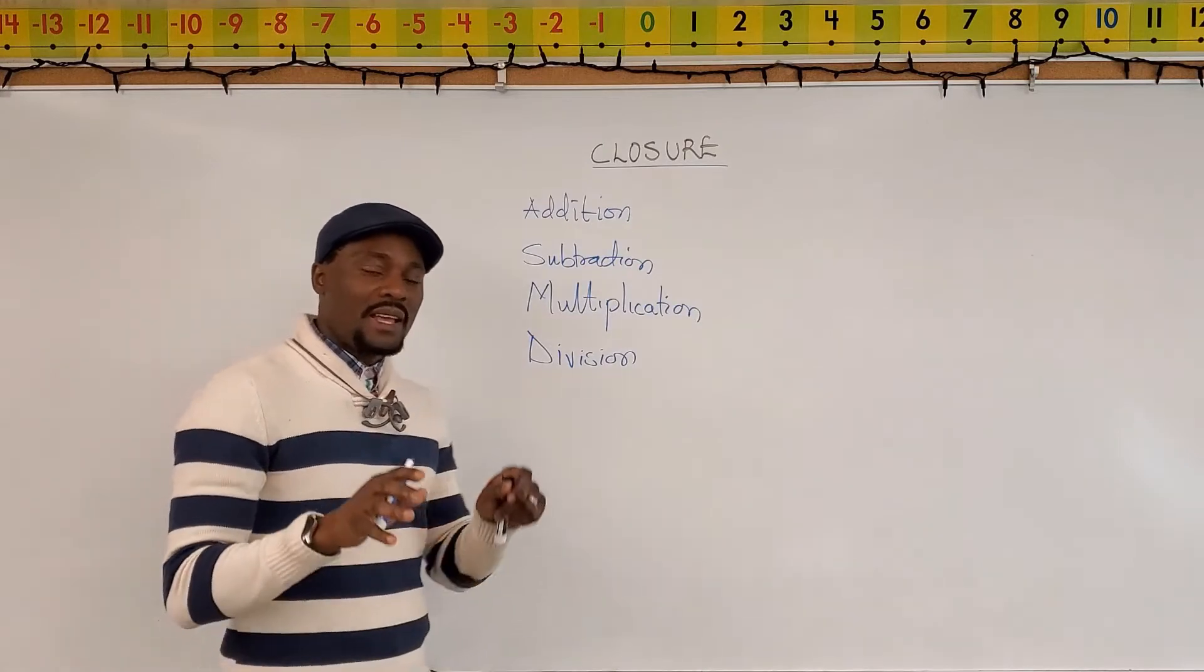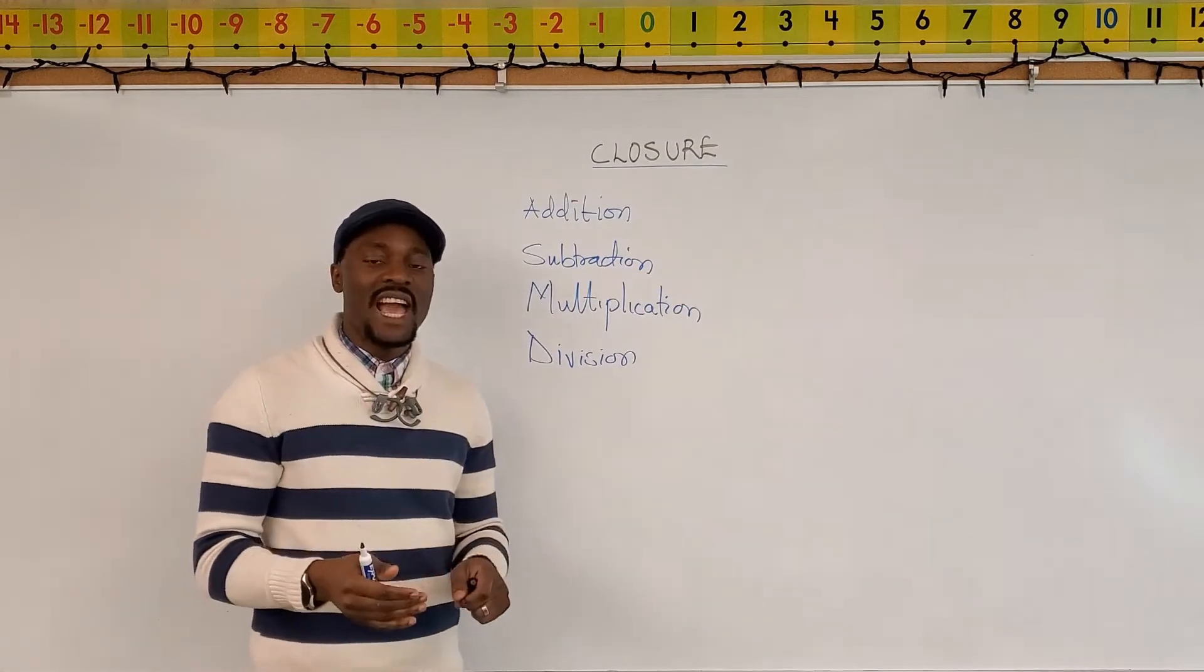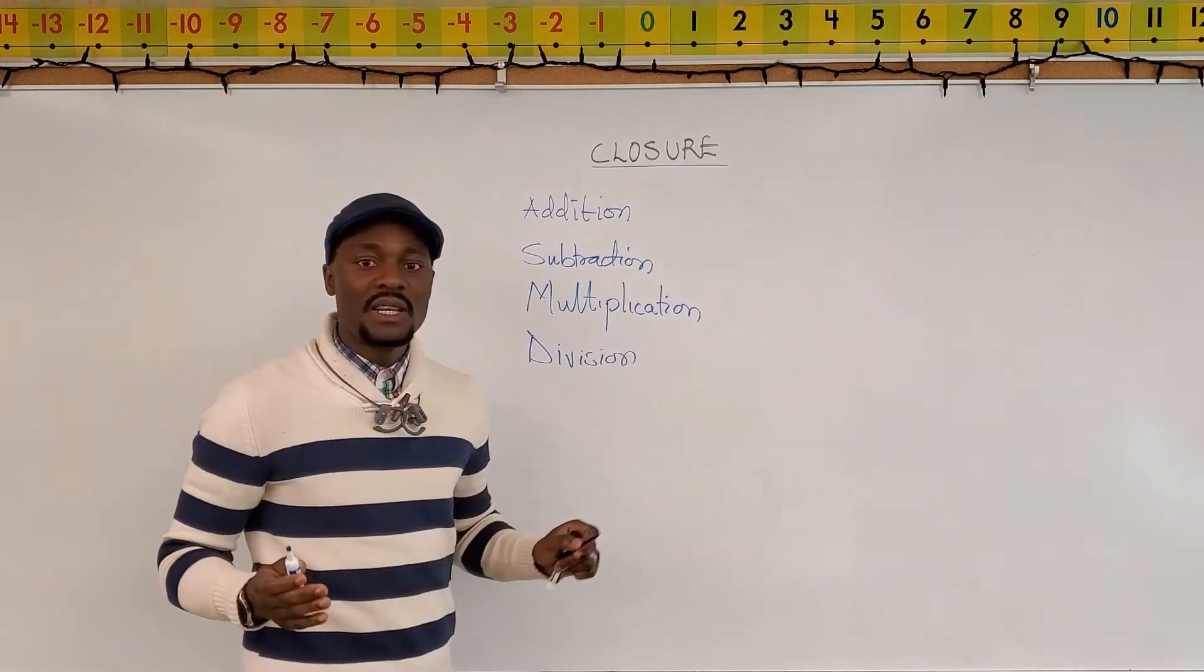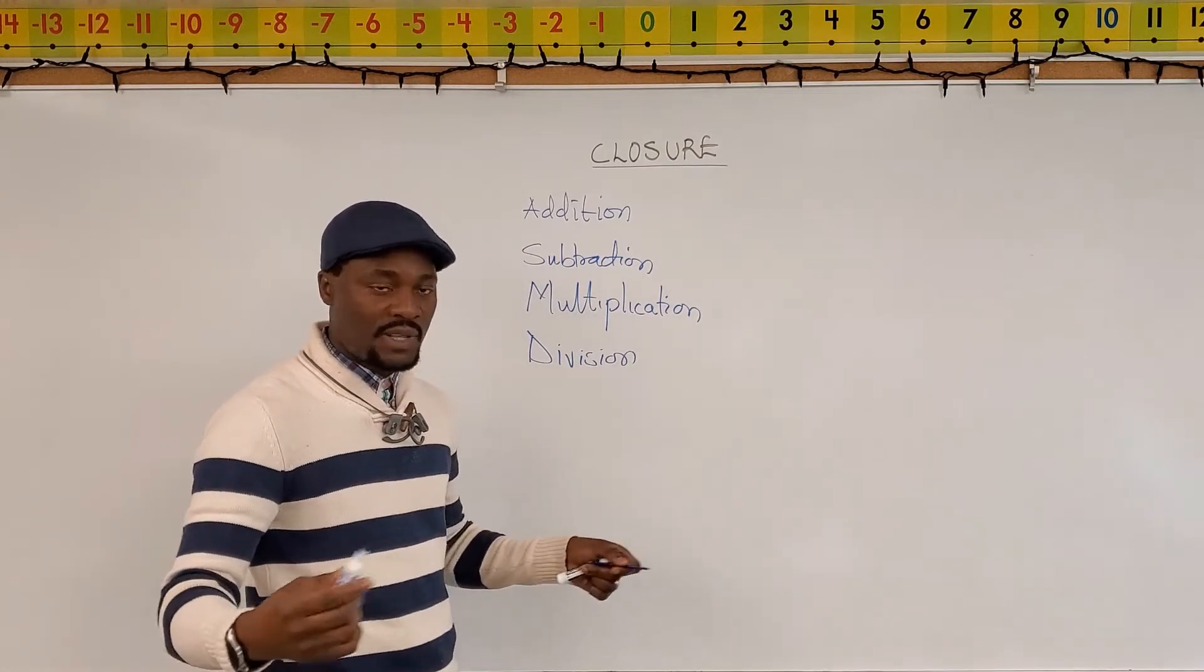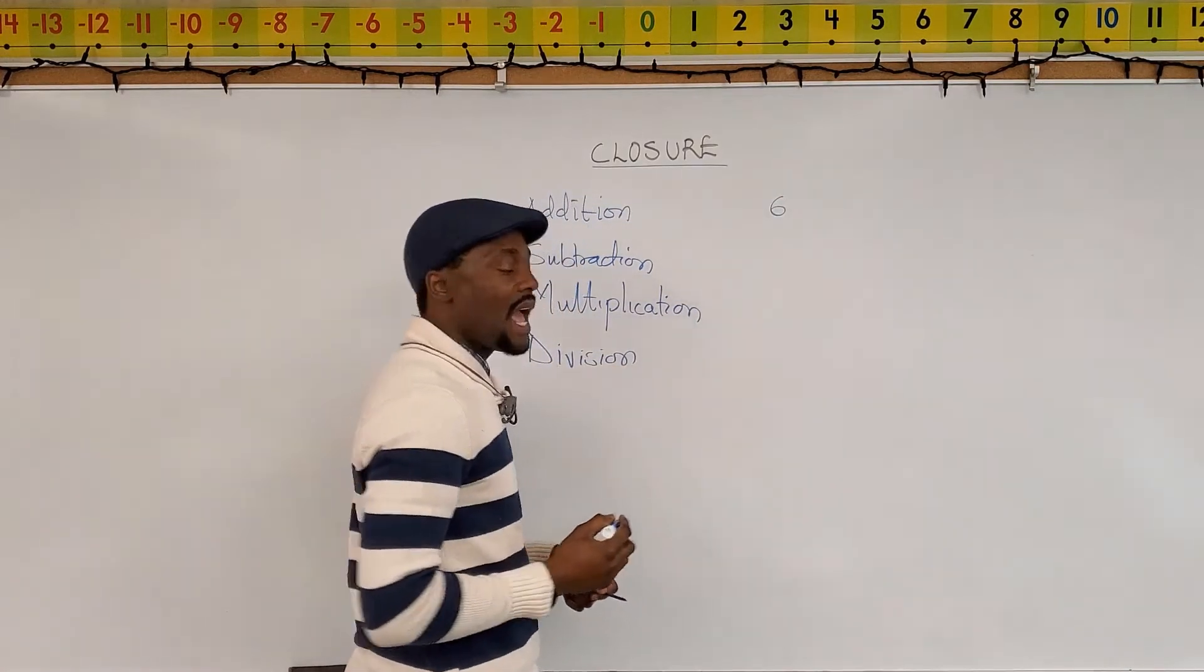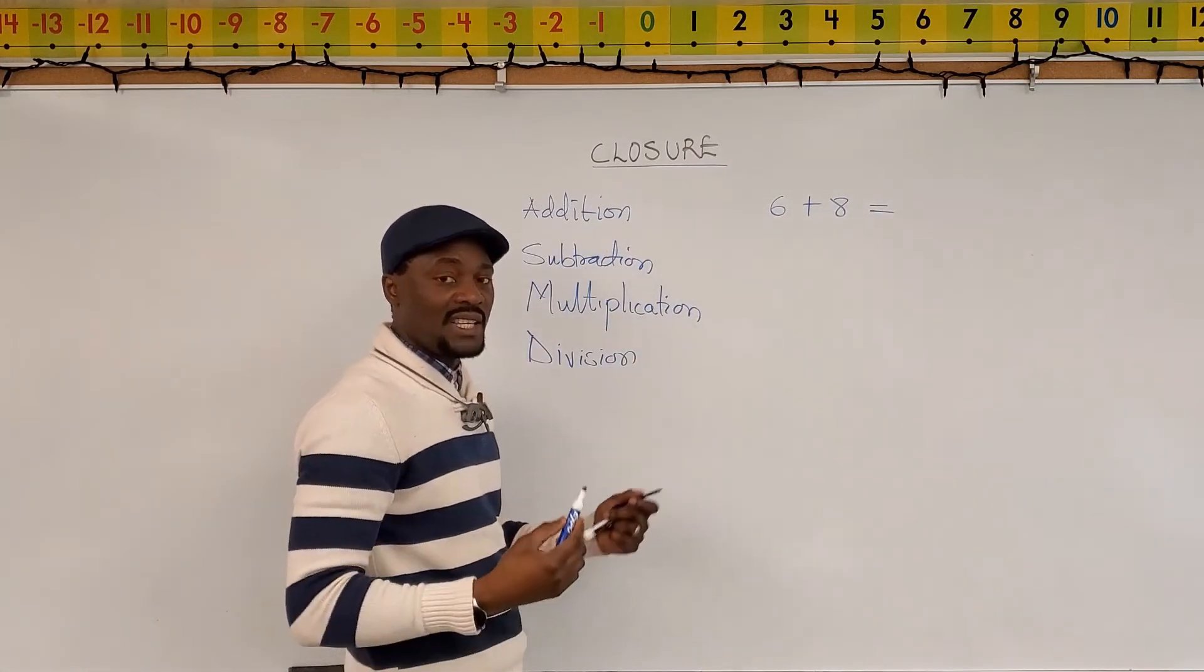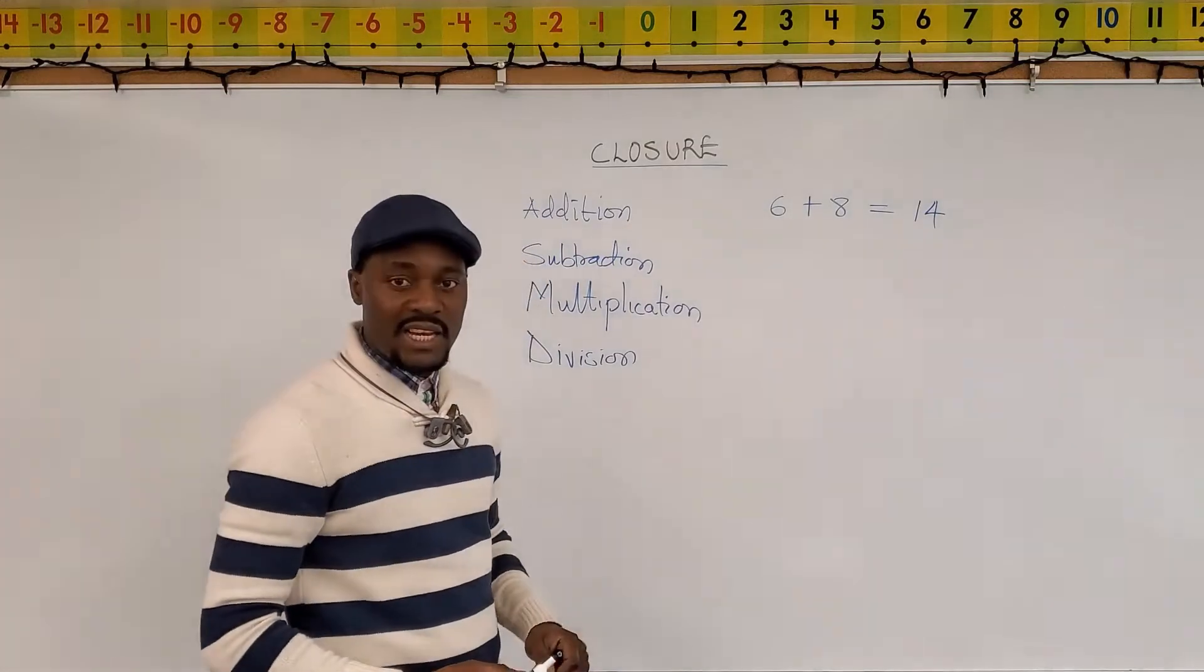So when you pick a set of numbers and you perform any of these operations on them, will you always get an answer that belongs to that set of numbers? Let's take an example. If I take even numbers, we know even numbers are multiples of two, including zero. So if I take the numbers six and eight, I add them together. Will my answer be an even number? Remember the set I just used as an example is even numbers. My answer here is 14. Is 14 an even number? Yes.